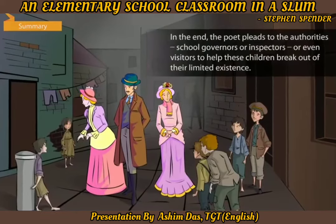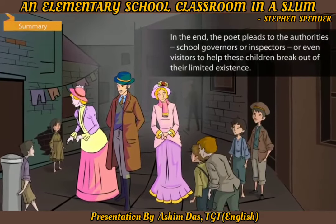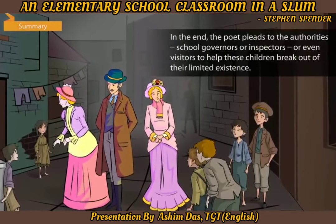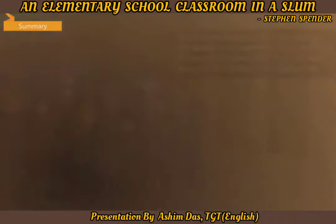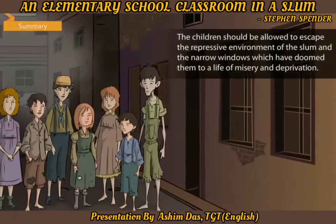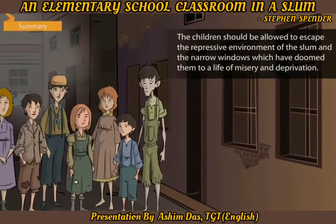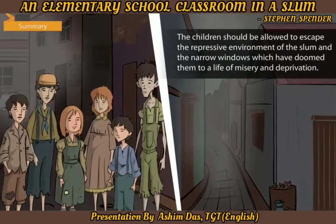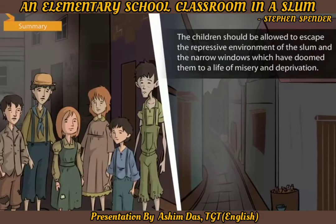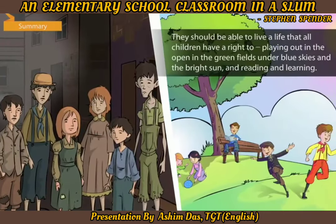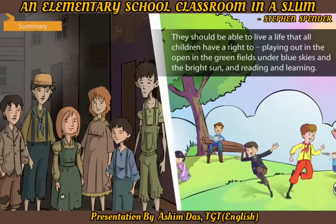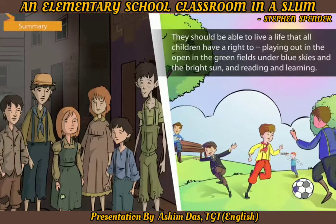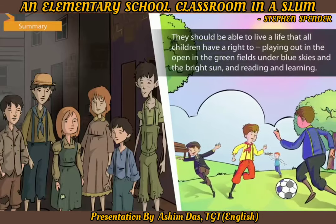In the end, the poet pleads to the authorities, school governors or inspectors or even visitors, to help these children break out of their limited existence. The children should be allowed to escape the repressive environment of the slum and the narrow windows which have doomed them to a life of misery and deprivation. They should be able to live a life that all children have a right to, like playing out in the open, in the green fields, on the blue skies and the bright sun, reading and learning.